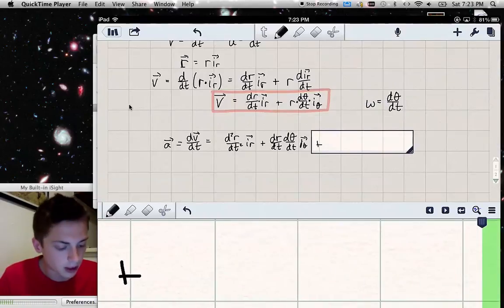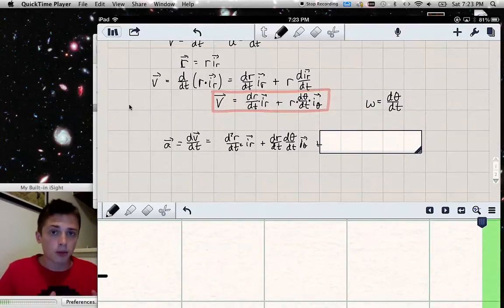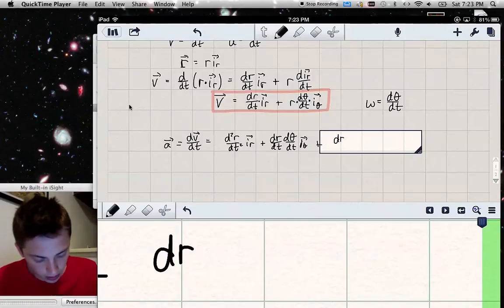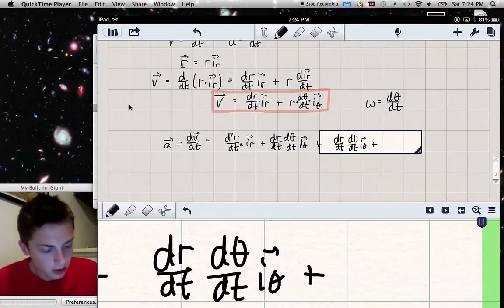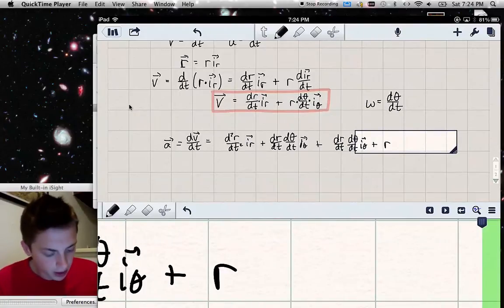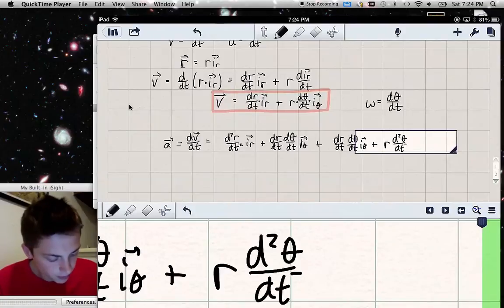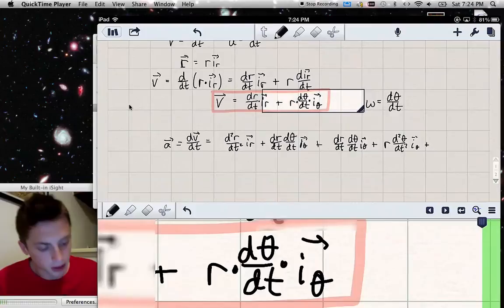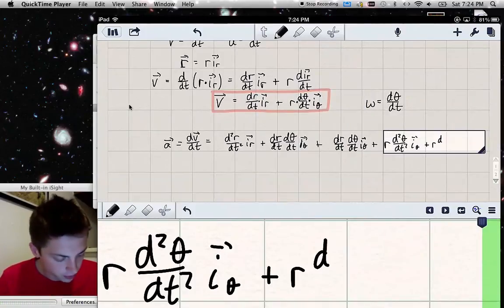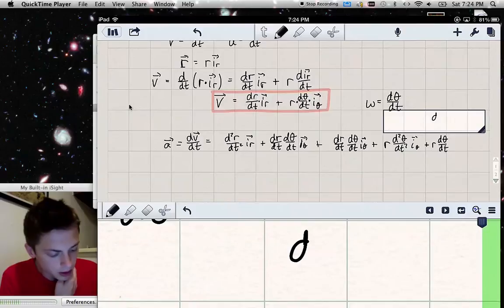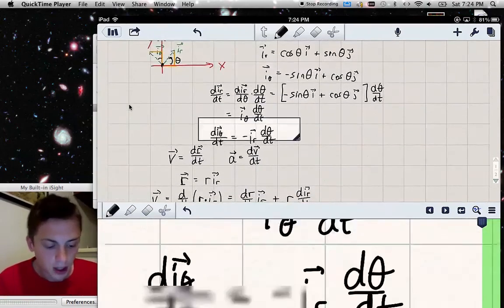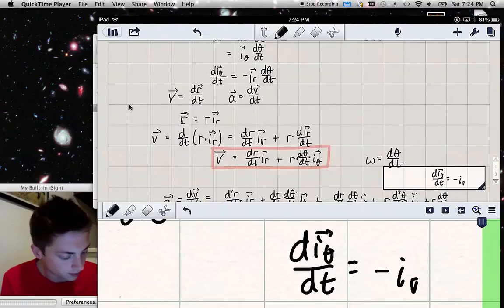Now the second term, a product of three members. So extending the product rule to a product of three members is actually quite easy, and here's how it goes. You hit the derivative on the first term, leave the other two terms alone. Then, you start with that original expression, you write the first term, leave it alone, hit the derivative on the second term, i_theta. Then starting with this original term, you leave the first two terms alone, and you hit the derivative on the third term, giving you the derivative of i_theta with respect to time. Let's write that off to the side. And from earlier in our setup, we said that's equal to negative i_r d theta over dt.